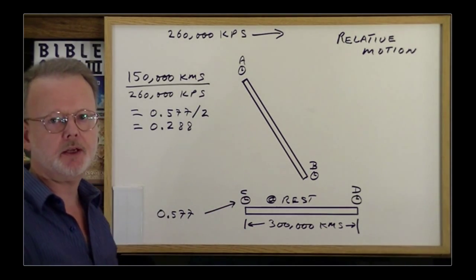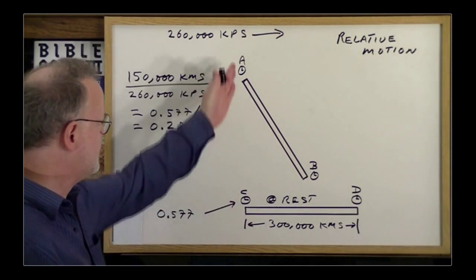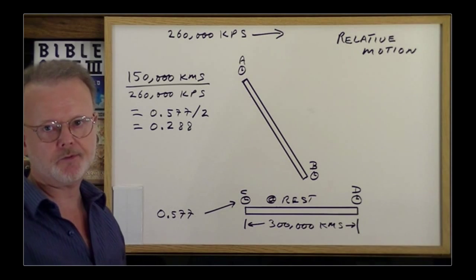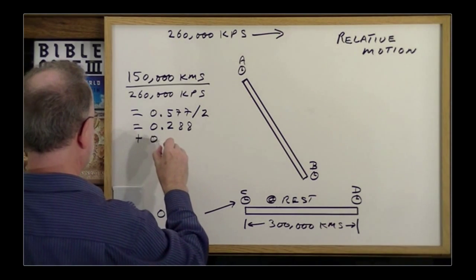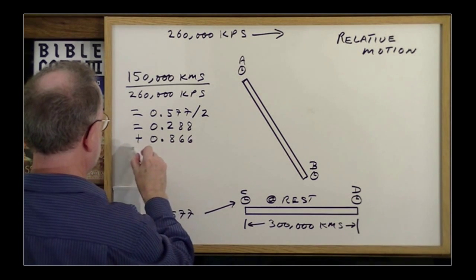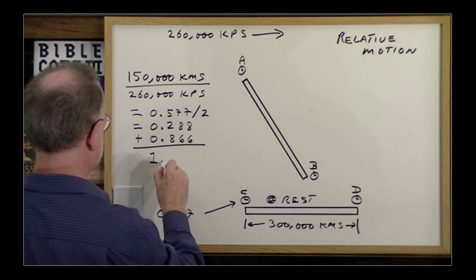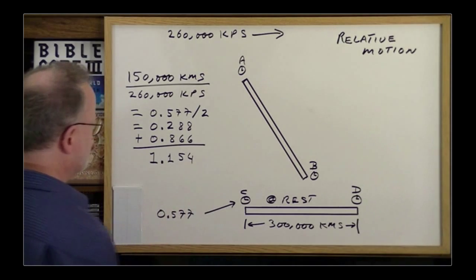So to see what time his clock said when he's lined up with clock C, you have to add the offset, so plus 0.866, which gives you a total of 1.154 seconds.